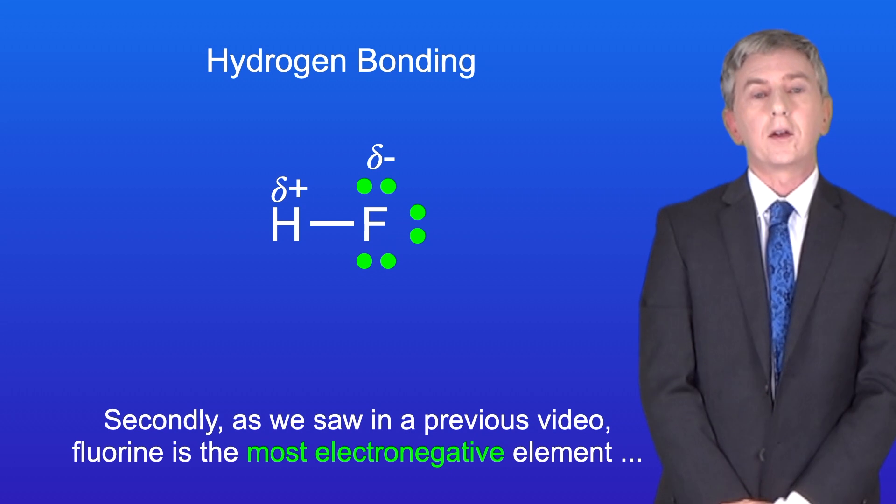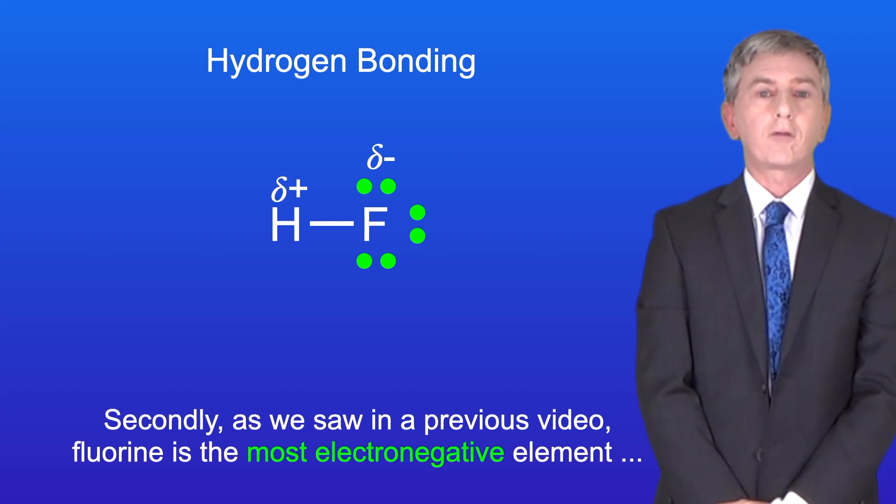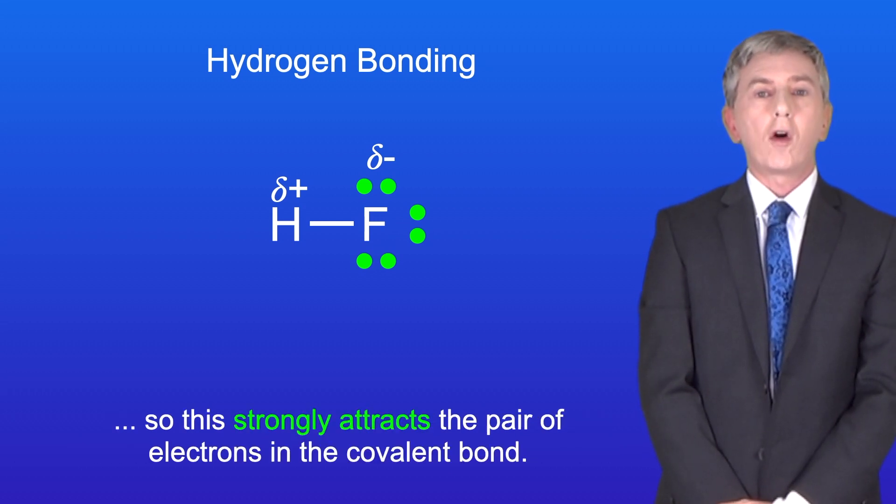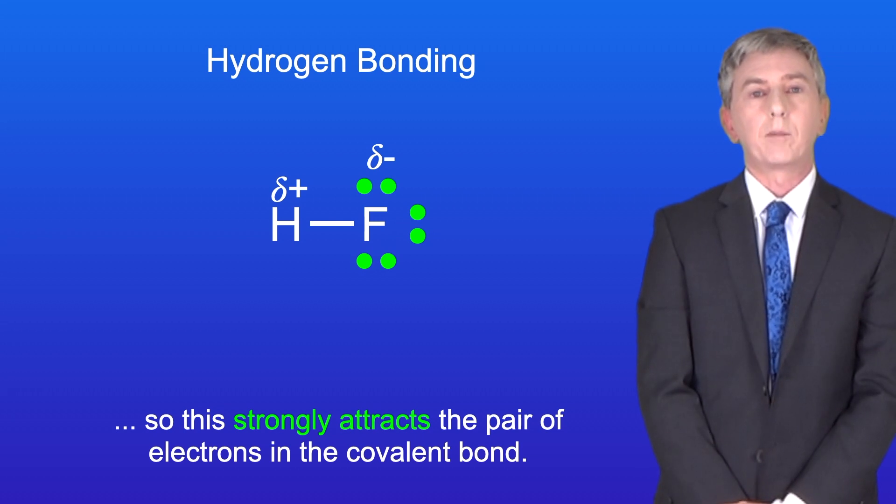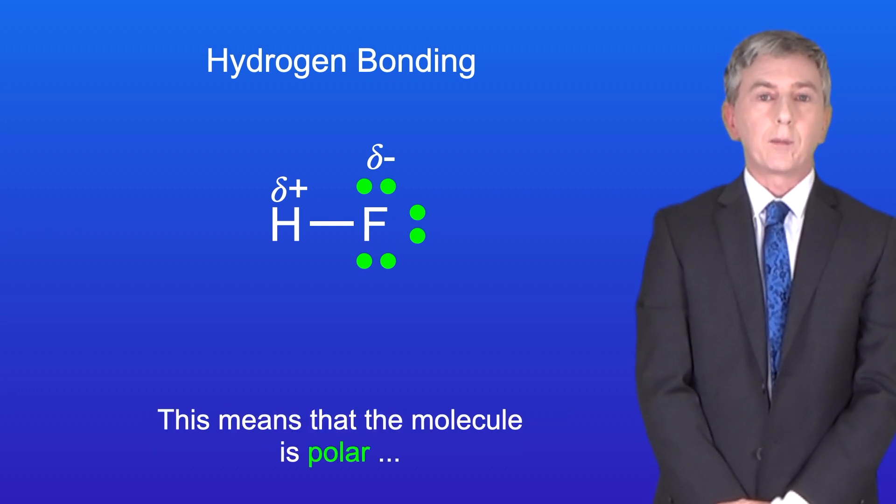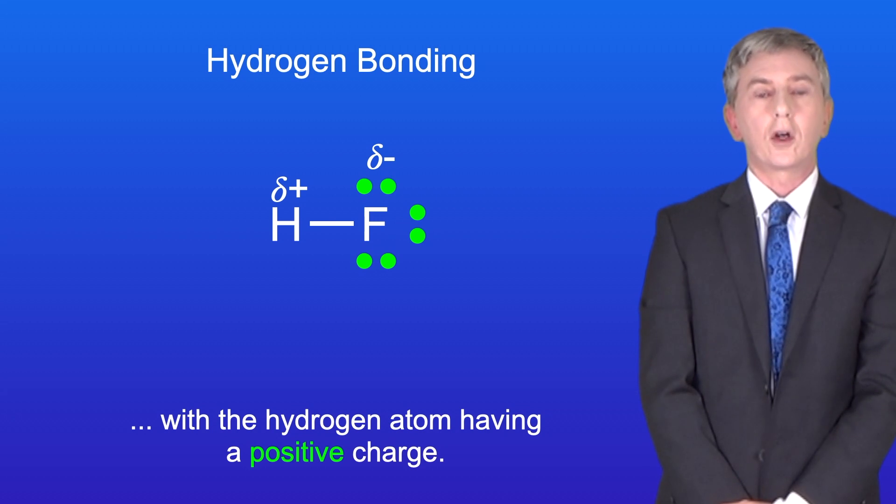Secondly, as we saw in a previous video, fluorine is the most electronegative element, so this strongly attracts the pair of electrons in the covalent bond. This means that the molecule is polar, with the hydrogen atom having a positive charge.